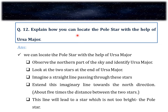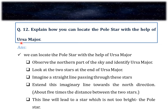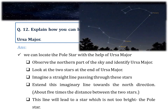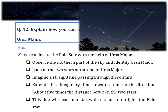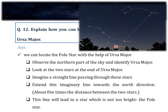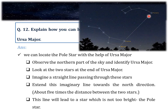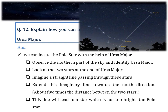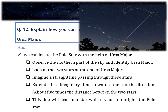Question number 12. Explain how you can locate the Pole Star with the help of Ursa Major. First, observe the northern sky and identify Ursa Major. Then look at the two stars at the end of Ursa Major. Imagine a straight line passing through these stars as shown in the figure. Extend the imaginary line towards the north. This line will lead to a star which is not too bright — that is the Pole Star.